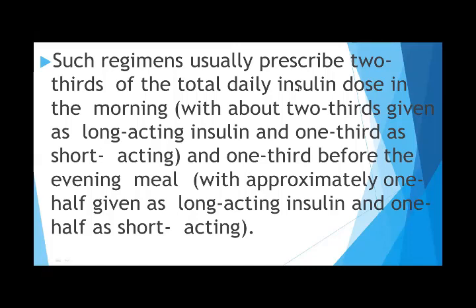Before breakfast the morning dose is 24 units, divided into a two-thirds and one-third ratio, which means 16 units of NPH (N) and 8 units of Regular (R) in the morning. The before-dinner dose is 12 units, divided 50-50, meaning 6 units of N and 6 units of R.